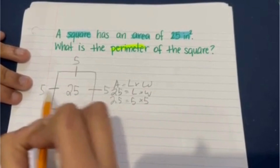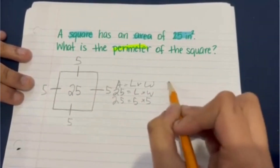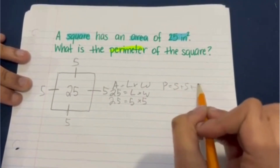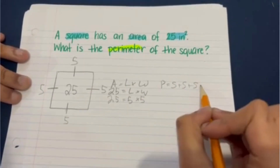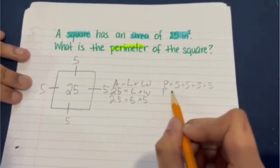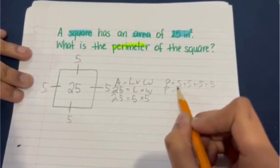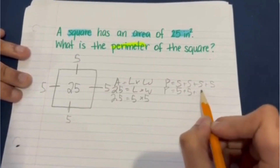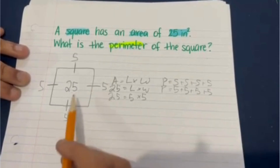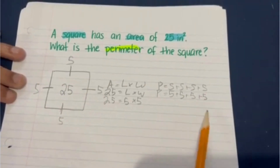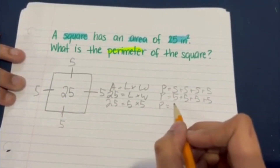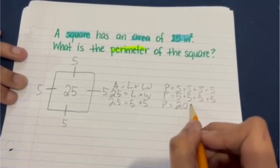Each of these sides will be five. Since perimeter equals side plus side plus side plus side, the perimeter will be five plus five plus five plus five — or, since we're dealing with a square, it can also be five times four — meaning that the perimeter is 20 inches.